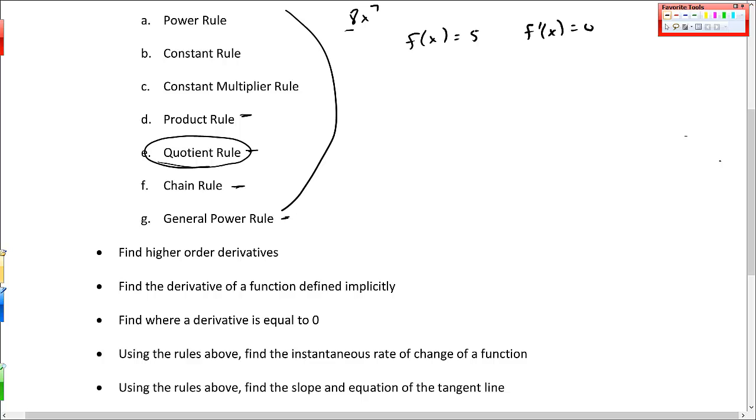So we also did higher order derivatives, the first, second, and third derivatives. That's here. Find the derivative of a function defined implicitly. We just did that. That's section 2.5. And you can tell there's no f of x equal to in those problems or y equal to in those problems. The y is somewhere floating around. It looks something like that, where these x's and y's are mixed up. These functions are defined implicitly, and that's the material that we covered in 2.5.